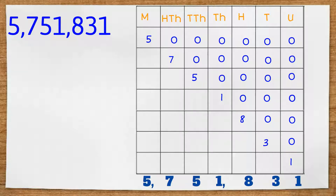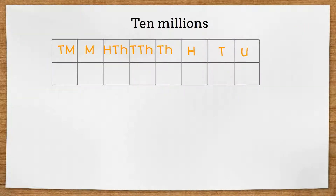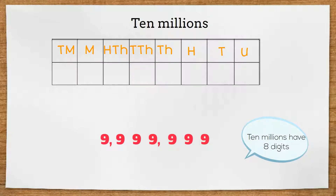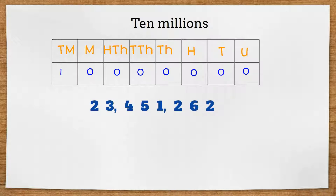I'm sure you're beginning to get the hang of this. Just like we had with thousands, we also have ten millions, which are eight digits. Counting up, we would get to nine million nine hundred and ninety-nine thousand nine hundred and ninety-nine, then ten million. A number like two three four five one two six two will be read as twenty-three million four hundred and fifty-one thousand two hundred and sixty-two.